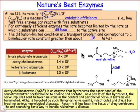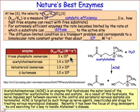One enzyme you might recognize that reaches this limit is acetylcholinesterase, which is involved in the transmission of neural signals — it hydrolyzes acetylcholine into the corresponding carboxylic acid and alcohol. Acetylcholinesterase needs to go very fast in order to turn nerve signals on and off, and so its catalytic efficiency is on the order of 10 to the 8th.